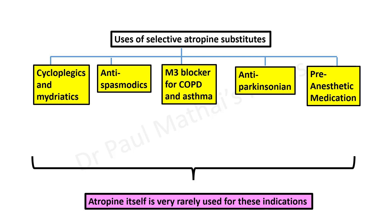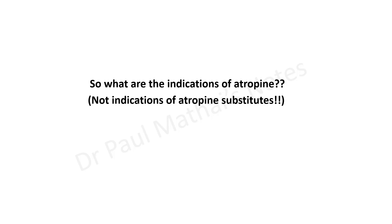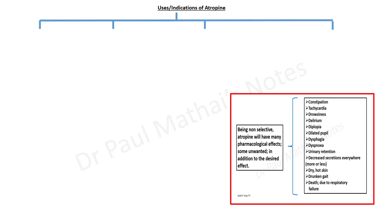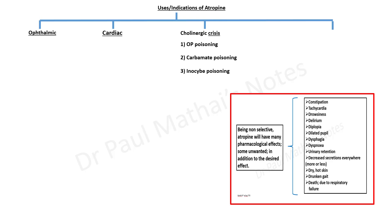Atropine itself is not commonly used for those indications. Its actual indications are relatively few: it can be used in ophthalmology, in cardiology, and in particular in certain emergency situations involving cholinergic crisis — the most famous example being organophosphorus poisoning. Atropine can also be used in carbamate poisoning and Inocybe poisoning, and as a therapeutic adjunct in certain situations.